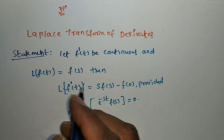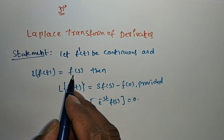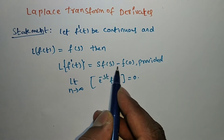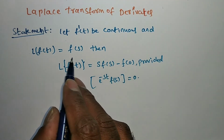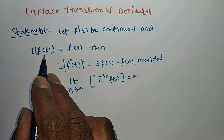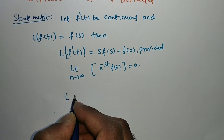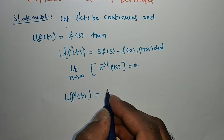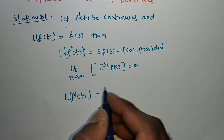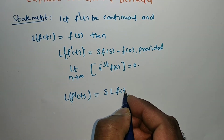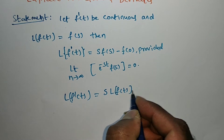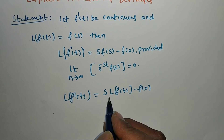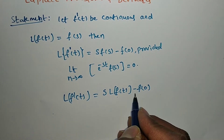This is the existence condition. If L{f(t)} = F(s), then we have to prove L{f'(t)} = s·F(s) - f(0). To remember this formula, read it as: L{bracket'} = s·L{bracket} - bracket(0).